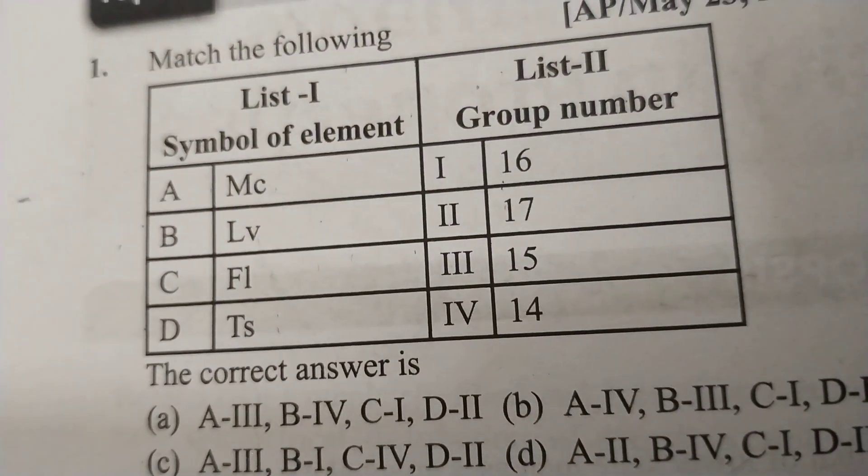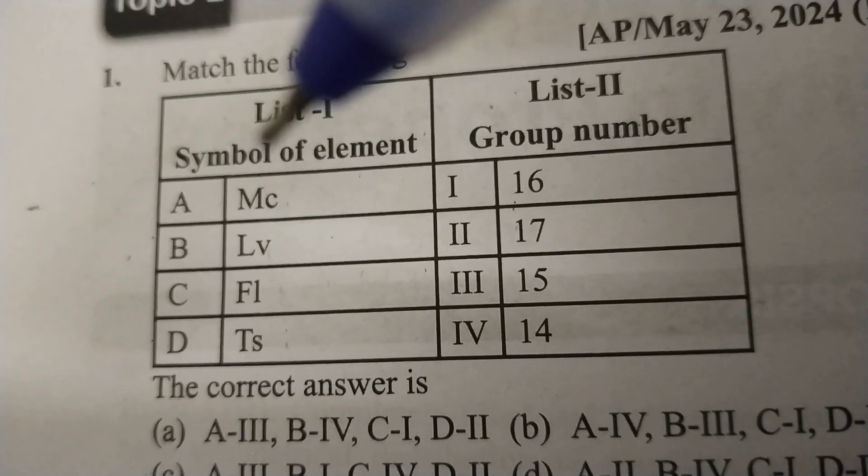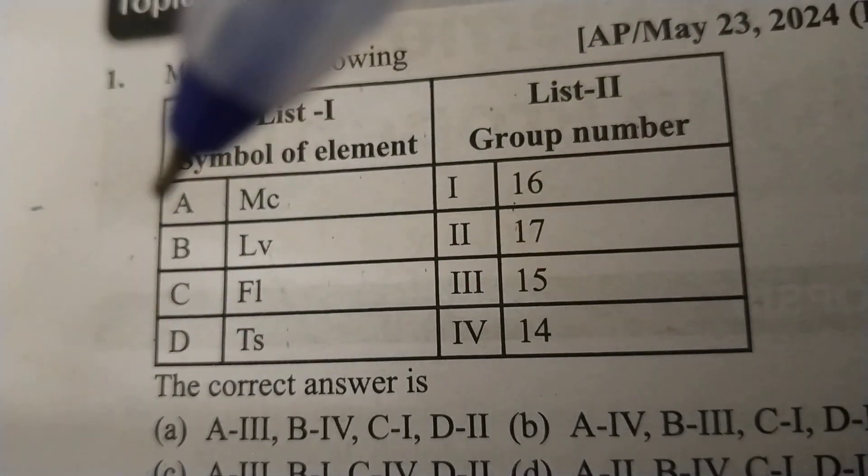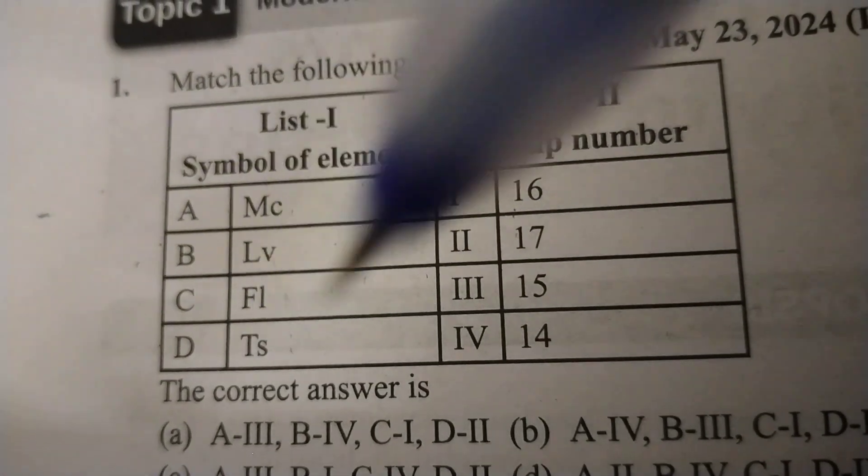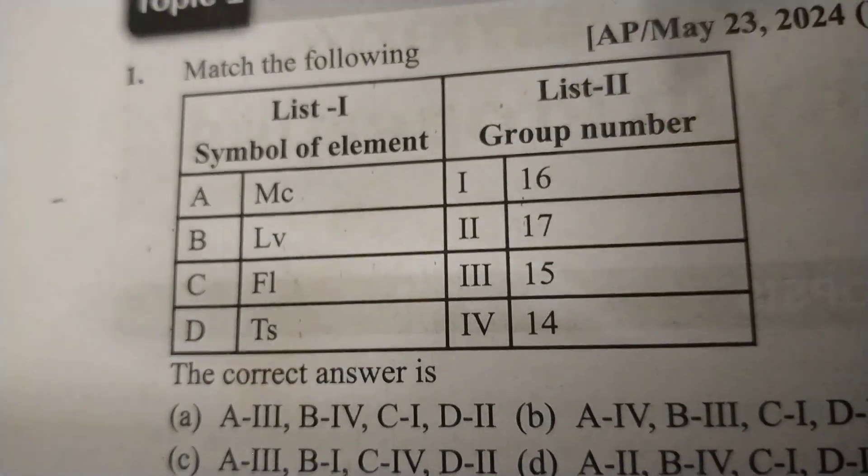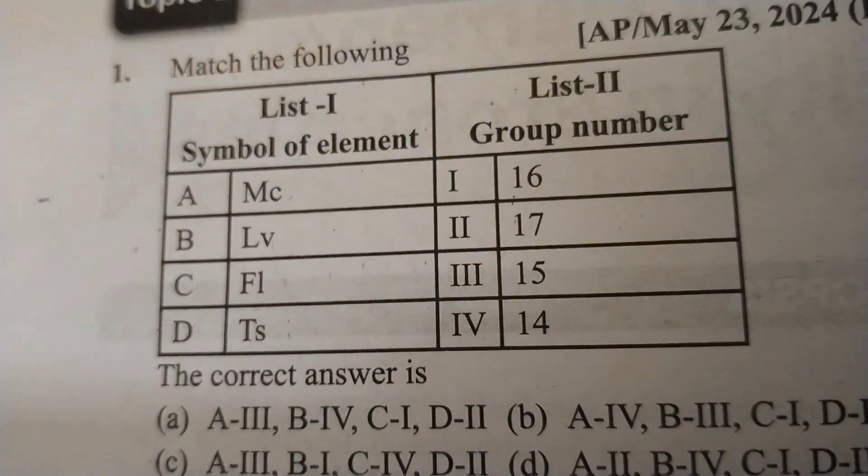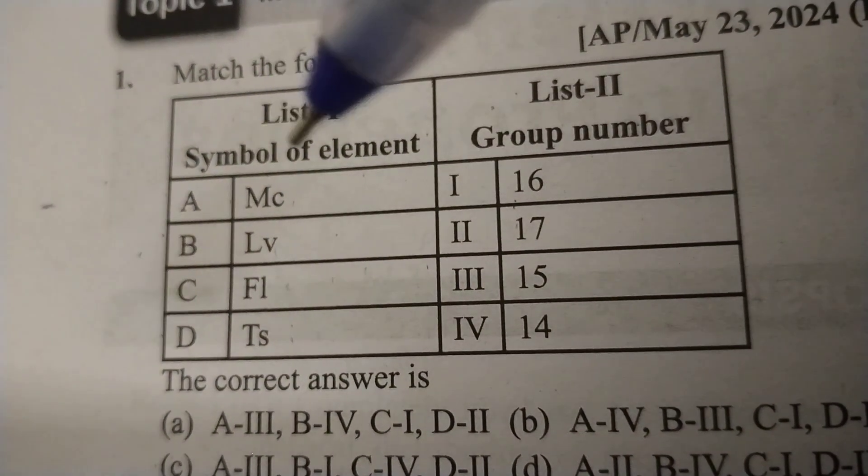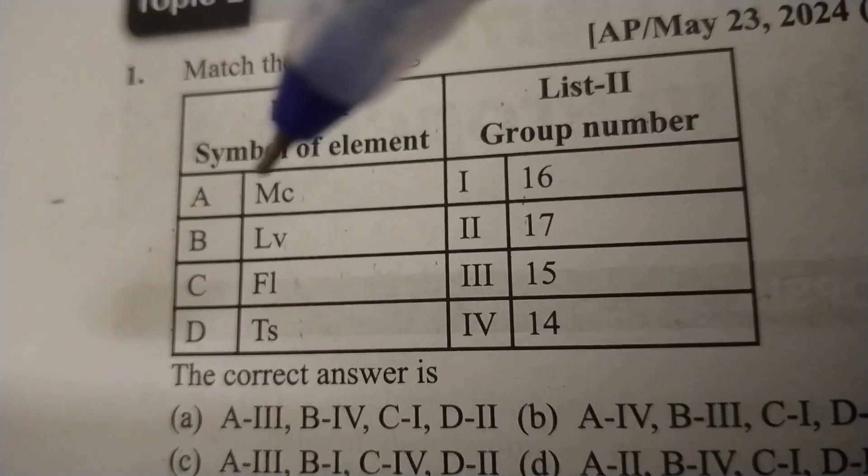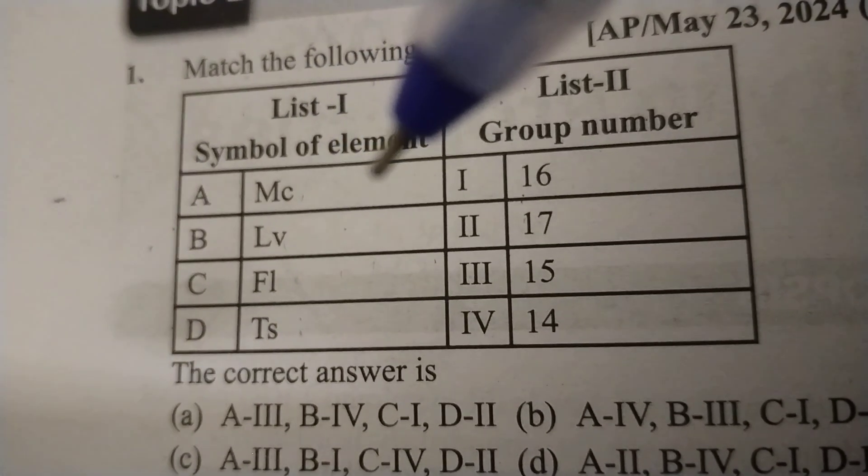For students targeting competitive JEE NEET 2025, let's focus on this matching question with symbols of elements and group numbers: Mc, Lv, Fl, Ts with group numbers 16, 17, 15, 14. Let's see: Mc - what is Mc? Mc is nothing but Moscovium. Moscovium, atomic number 115, so 15th group element.